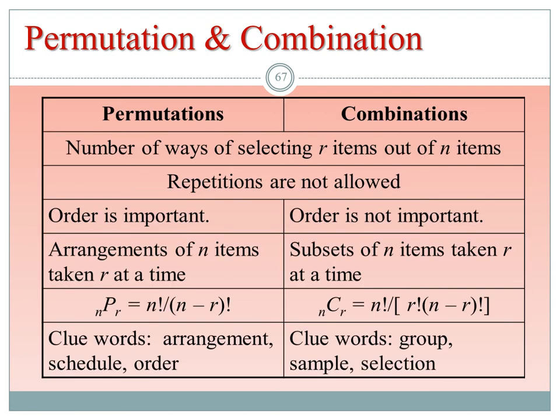Key distinction between permutation and combination: both select r items from n items without repetition. In permutation, order is important (arrangement/schedule); in combination, order is not important (group/sample/selection). Formulas: nPr = n! / (n−r)! and nCr = n! / (r! × (n−r)!). Clue words for permutation: 'arrangement,' 'schedule,' 'order.' Clue words for combination: 'group,' 'sample,' 'selection.' Calculators like TI-83/84 have built-in nPr and nCr functions.